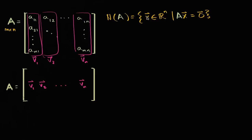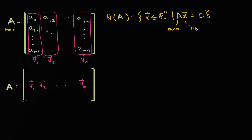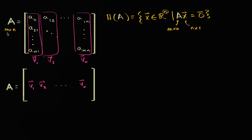Why does x have to be a member of R^n? Just for the matrix multiplication to work. If A is M by N, then in order to make the matrix-vector multiplication work, x has to be an N by 1 vector — so it's going to have N components, making it a member of R^n. If A were M by 7, we'd be dealing with R^7.